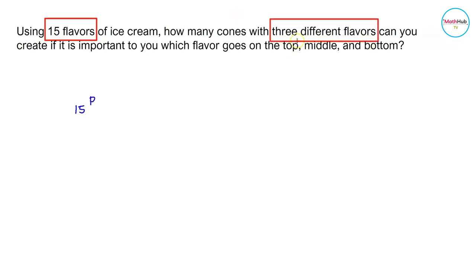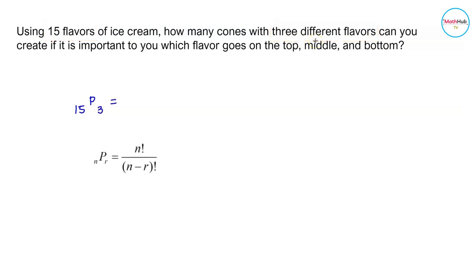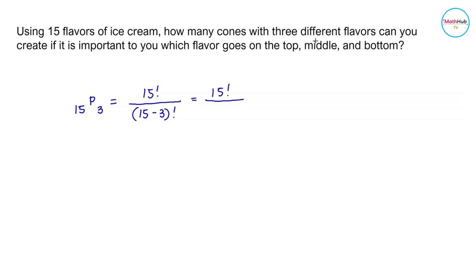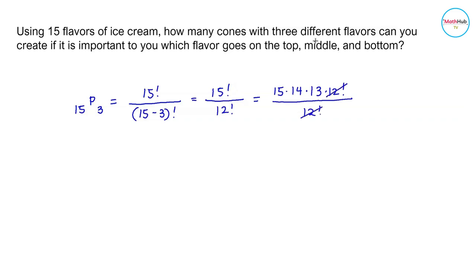P(15, 3) = 15! / (15 - 3)! = 15! / 12!. We rewrite the numerator as 15 × 14 × 13 × 12!, cancel 12! on both numerator and denominator, and multiply 15 × 14 × 13 to get 2730 arrangements.